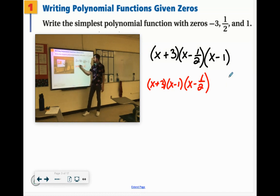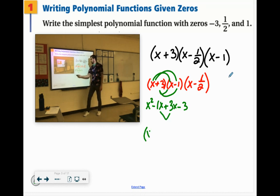But this part's easy to foil. We'd have x squared minus 1x. Inside, 3 times x is 3x. And the last, 3 times negative 1 is negative 3. Which if I simplify these x's then, negative 1x plus 3x is 2x. So we have x squared plus 2x minus 3.